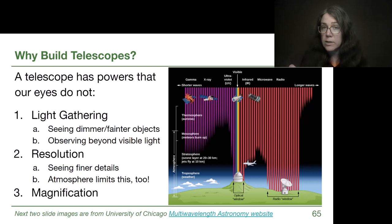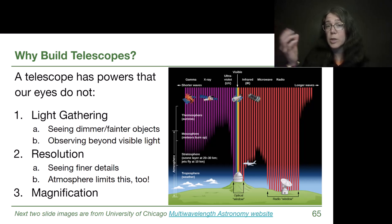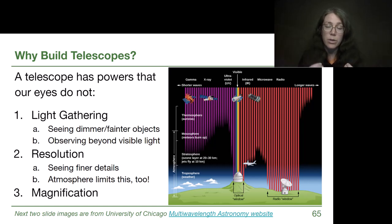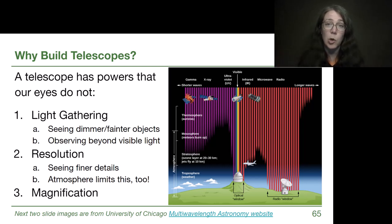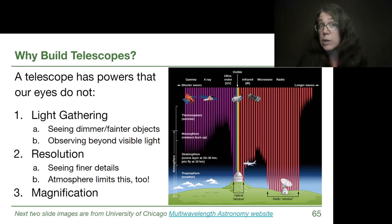That means we can see fainter or dimmer objects, which helps a lot when looking for distant stars. If we build a telescope that can gather different types of light than our eyes can see, our view of the universe expands dramatically. When we build a telescope to see x-rays by gathering that light out in space, we get a view that our eyeballs simply would not.